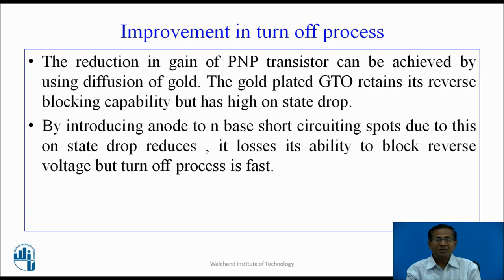The gain of the PNP transistor can be reduced by using gold diffusion. The gold-plated GTO retains its reverse blocking capability but has high onset voltage drop; that is why this method is not used. The second methodology is by introducing anode-to-N-base short-circuiting spots. This reduces the onset drop but the device loses its ability to block reverse voltage, though turn-off becomes faster. Therefore, this methodology is also not used, because the device loses its ability to block reverse voltage.